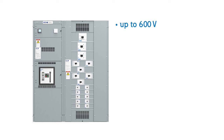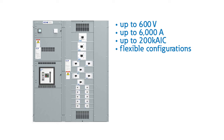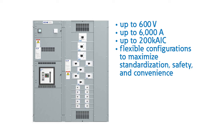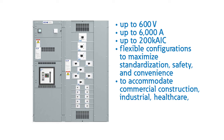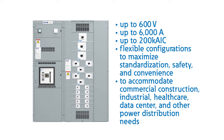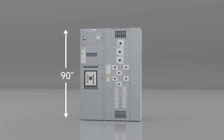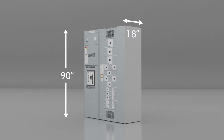Switchboards can range up to 600 volts, 6000 amps, and 200 KAIC, and offer flexible configurations to maximize standardization, safety, and convenience to accommodate commercial construction, industrial, healthcare, data center, and other power distribution needs. Switchboards are typically 90 inches tall with a minimum depth of 18 inches.